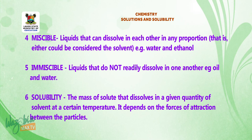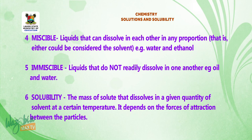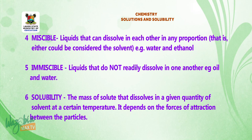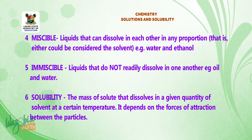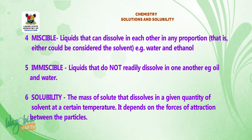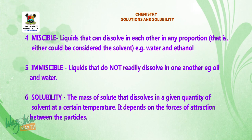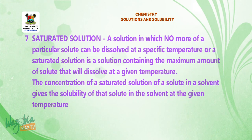Other terms. 4. Miscible — liquids that can dissolve in each other in any proportion; either could be considered the dissolving medium, e.g., water and ethanol. 5. Immiscible — liquids that do not readily dissolve in one another, e.g., oil and water. 6. Solubility — the mass of solute that dissolves in a given quantity of solvent at a certain temperature; it depends on the force of attraction between the particles.